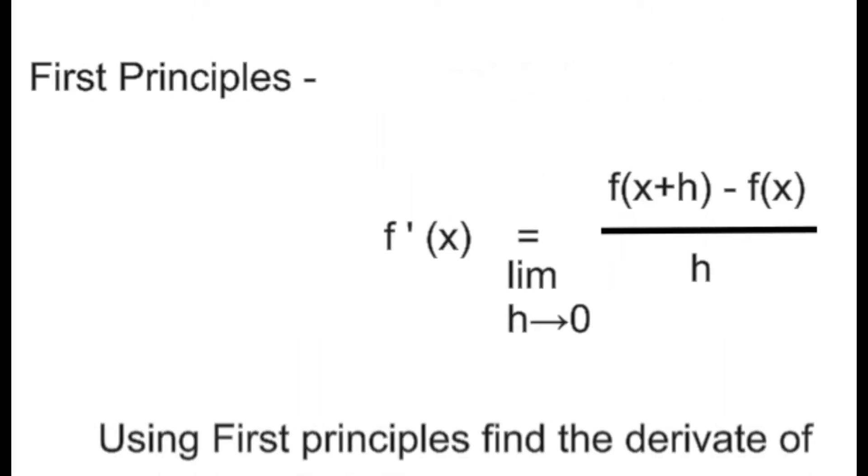So today's video will be talking about first principles. Now the formula for first principle is f prime x equals f of x plus h minus f of x over h. And there is a limit where h tends towards 0.